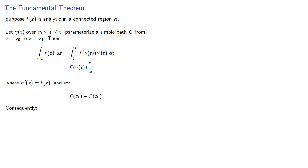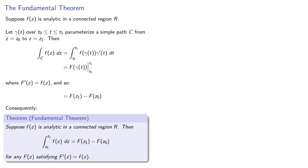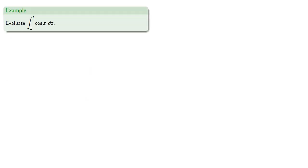Consequently, if f is analytic in a connected region R, then the integral is pretty much what we'd expect it to be. So we can now evaluate an integral like the integral from 1 to i of cosine z dz. Since cosine is analytic everywhere, the fundamental theorem applies.